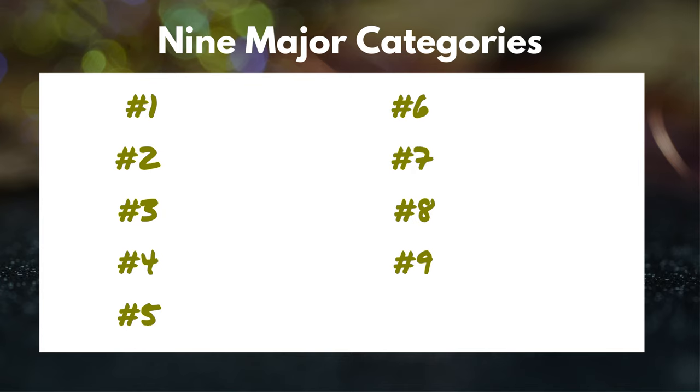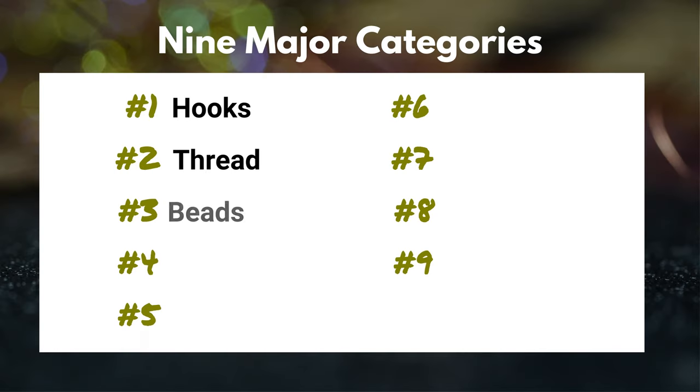When I need to complete a really big project or learn a complex topic, I've found it really effective to take each of the individual tasks or concepts and group them into broader categories. That's exactly what we've done here — we've taken the fish favorite materials and grouped them into nine major categories. Categories 1, 2, and 3 — hooks, thread, and beads — we tackled all three in sections 1, 2, and 3 of this module, so if you want to take a deep dive into any of those, be sure to check out those videos. But today we're focused on categories 4 through 9.